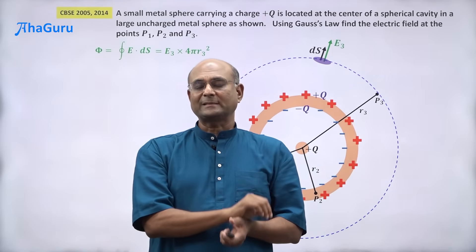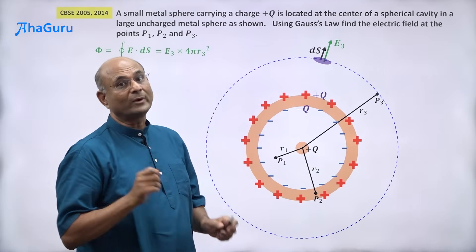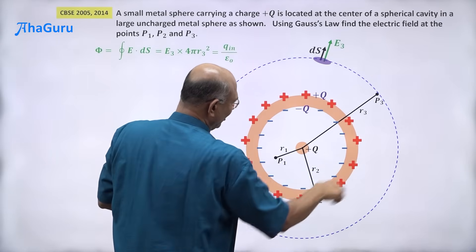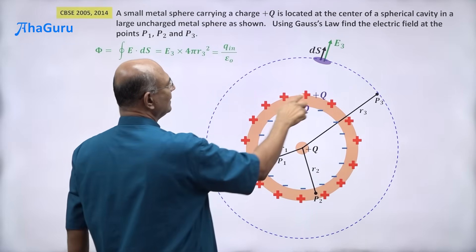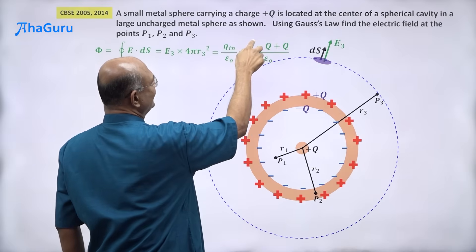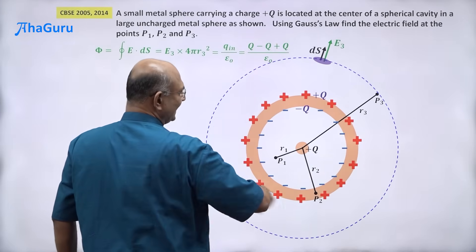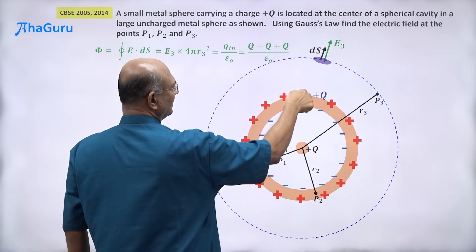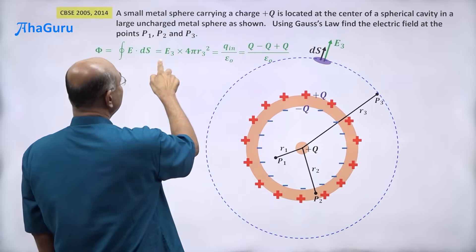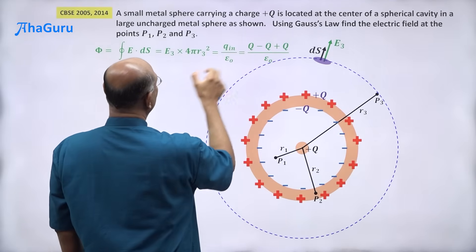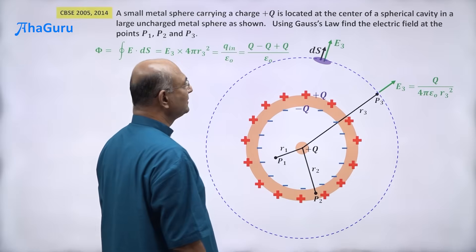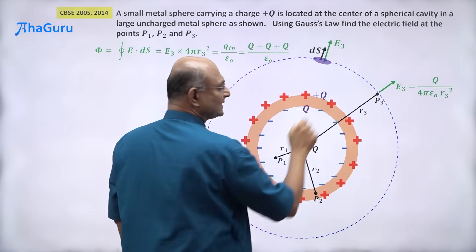Gauss's law tells us that for a closed surface, the flux equals the charge enclosed divided by epsilon naught. The charge enclosed is plus q, minus q, and plus q. The minus q and one plus q cancel, leaving a total enclosed charge of plus q. So E3 times 4πr₃² equals q over epsilon naught, giving E3 = q / (4πε₀r₃²). That is the electric field at P3.